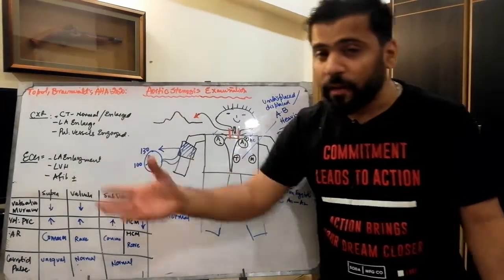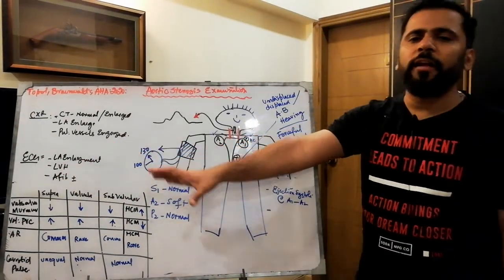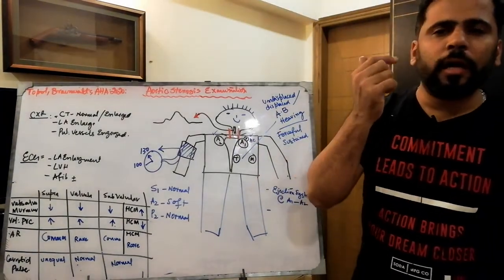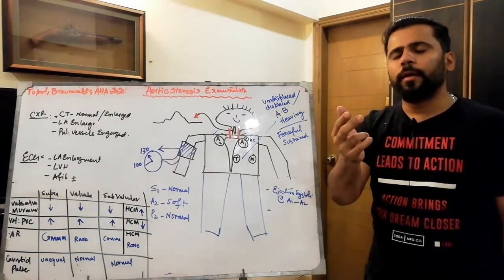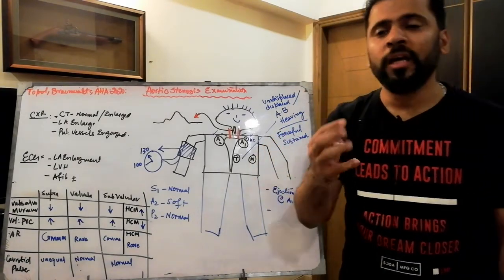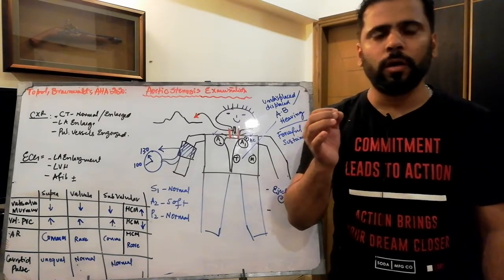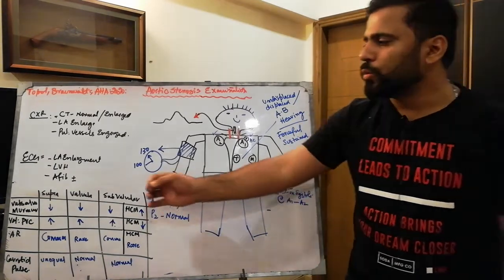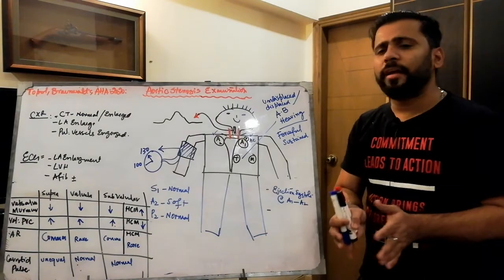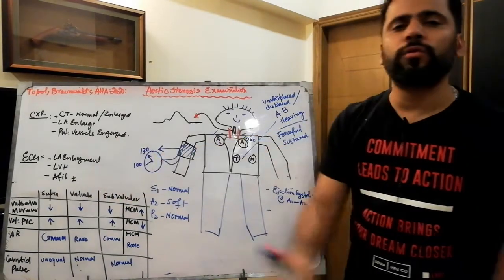On ECG, there would be left atrial enlargement secondary to diastolic dysfunction, and LV hypertrophy. You should know the Sokolow criteria, the Cornell criteria, the modified Cornell criteria, and the Romhilt-Estes criteria — four criteria for diagnosing LVH on ECG. Atrial fibrillation may also occur when there is massive left atrial enlargement secondary to LV hypertrophy.